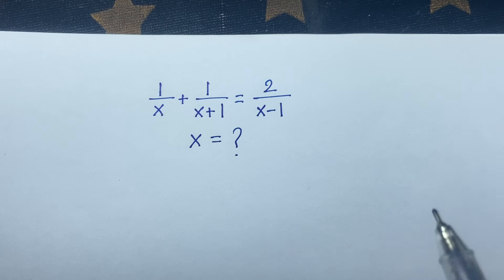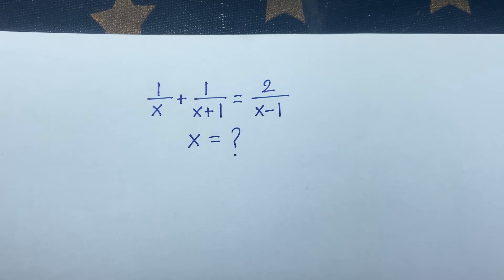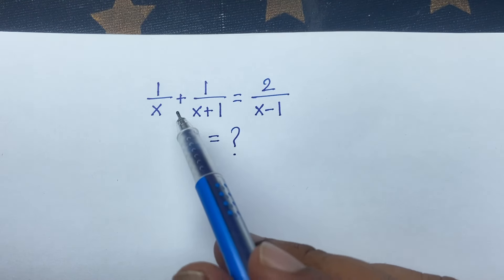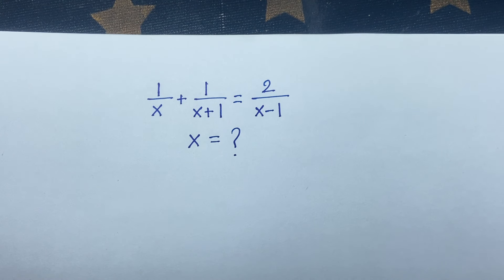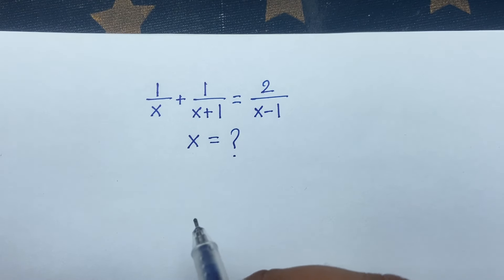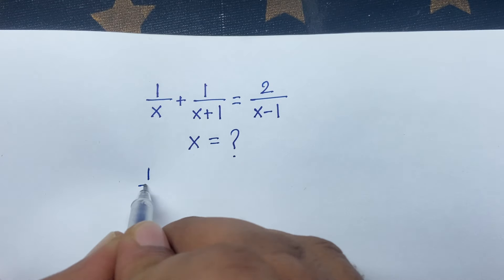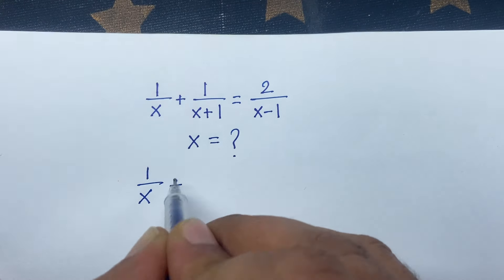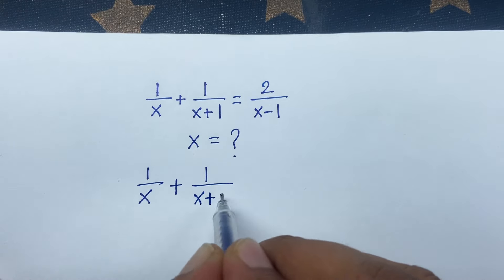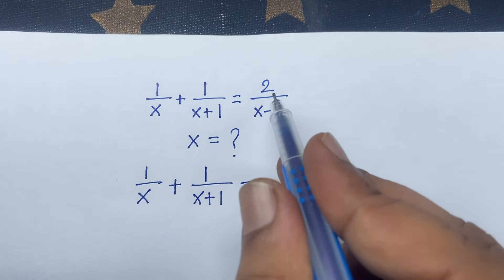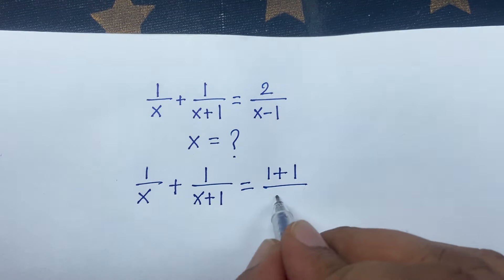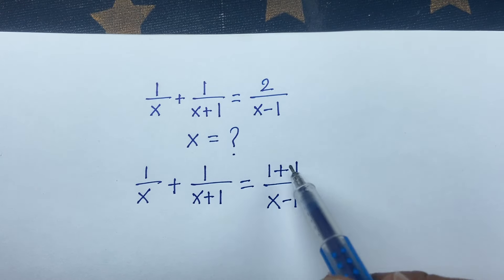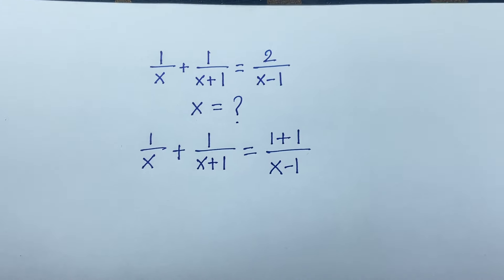Hello everyone. In this video, we have this interesting math question: 1 over x plus 1 over x plus 1 is equal to 2 over x minus 1. We'll find out the value of x. To solve this, I can rewrite 2 as 1 plus 1, so this becomes 1 over x minus 1 plus 1 over x minus 1.